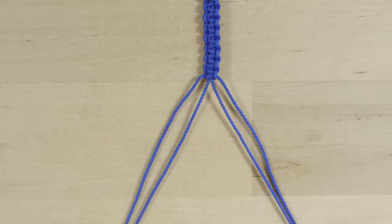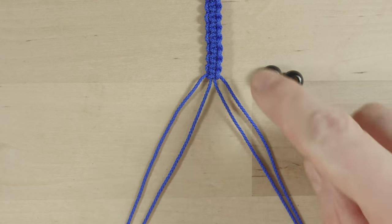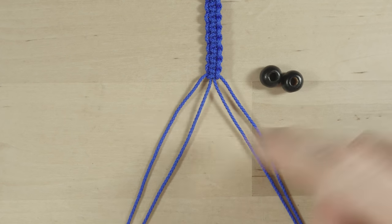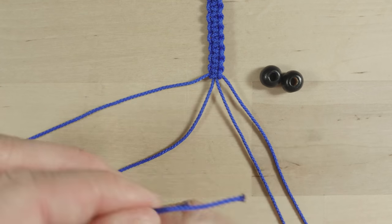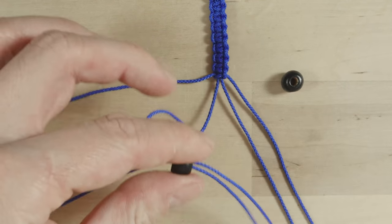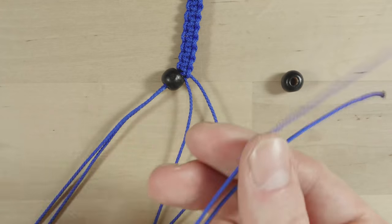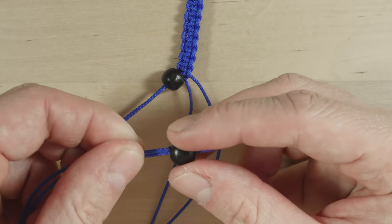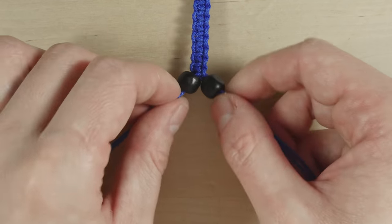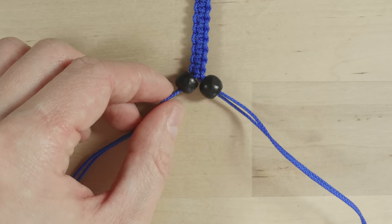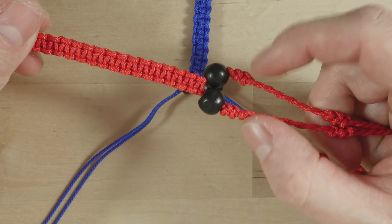After a length of square knots, I'm going to split my ends into two pairs. Like this. Then attach a couple of beads, one onto each pair.